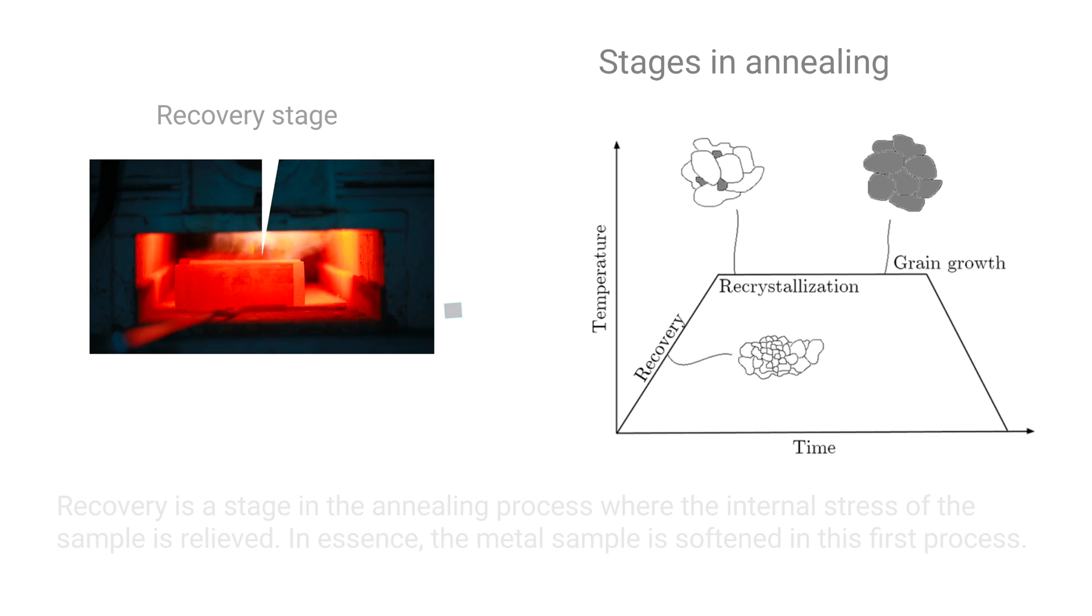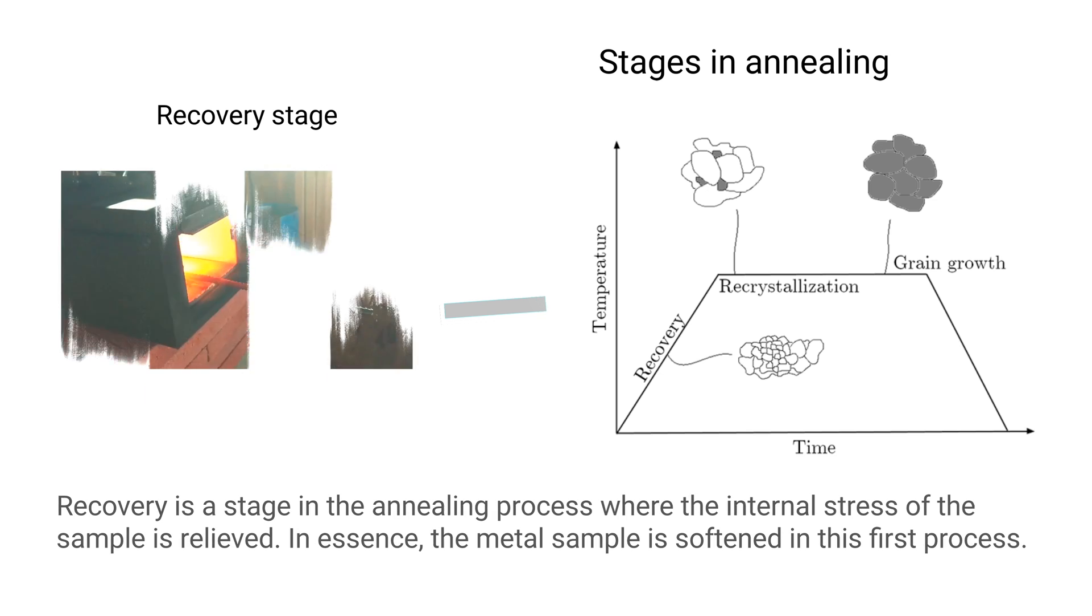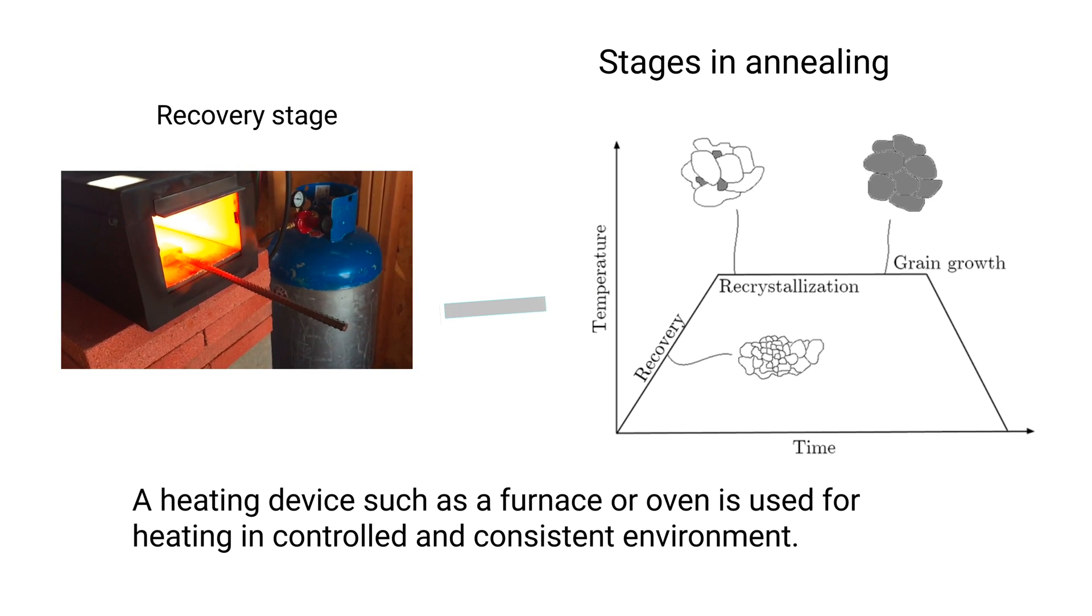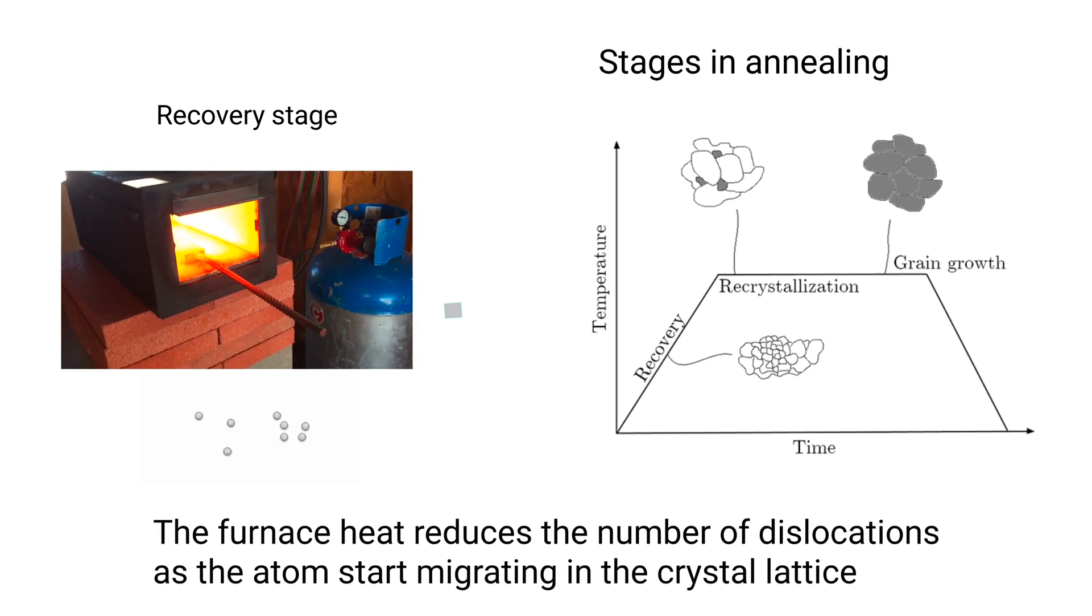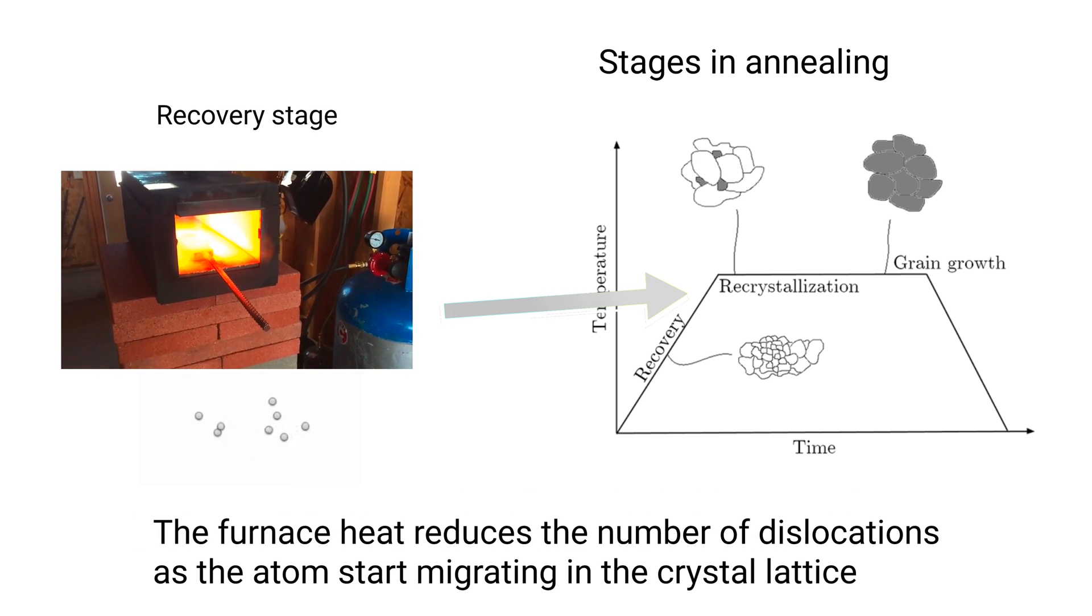Recovery stage. Recovery is a stage in the annealing process where the internal stress of the sample is relieved. In essence, the metal sample is softened in this first process. A heating device such as a furnace or oven is used for heating in a controlled and consistent environment. The furnace heat reduces the number of dislocations as the atoms start migrating in the crystal lattice.